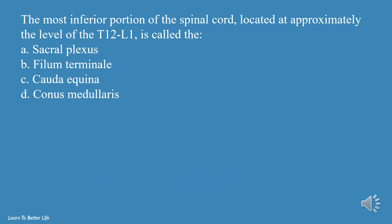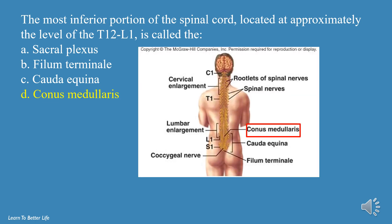The thecal sac contains the cerebrospinal fluid which provides nutrients and buoyancy to the spinal cord. The most inferior portion of the spinal cord, located at approximately the level of T12 to L1, is called the: a. Sacral Plexus, b. Filum Terminale, c. Cauda Equina, d. Conus Medullaris. The answer is d, Conus Medullaris.